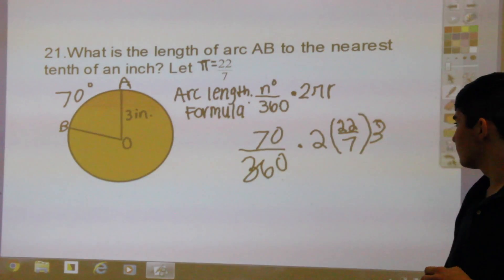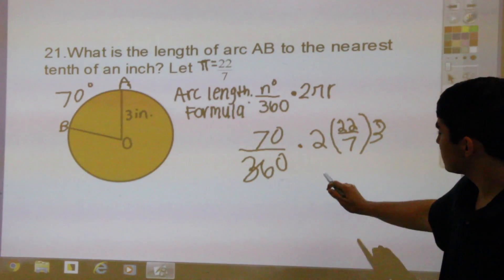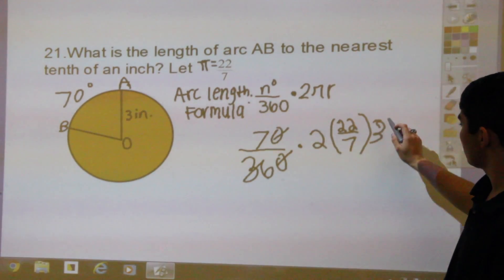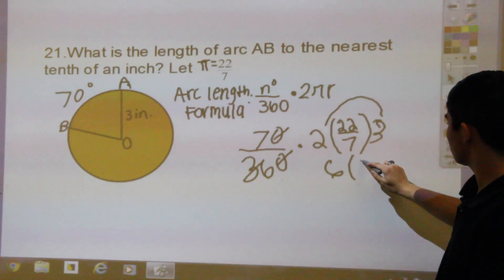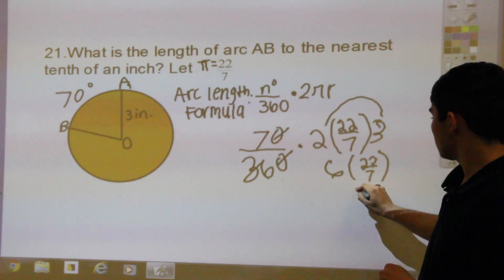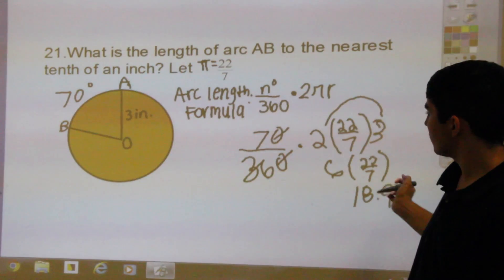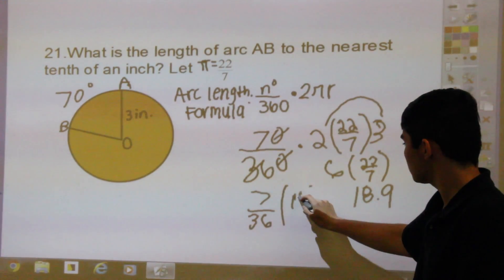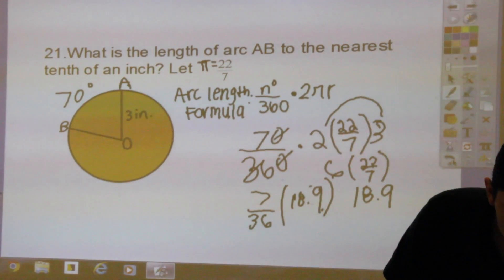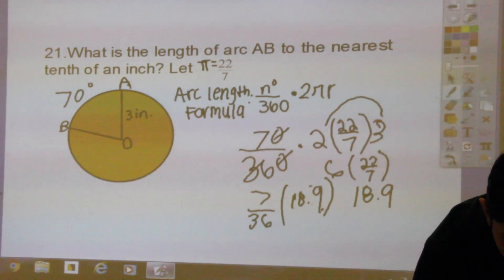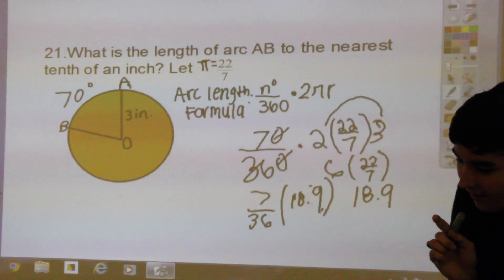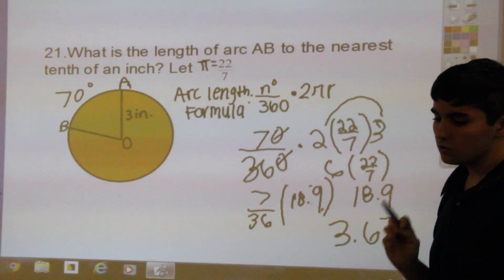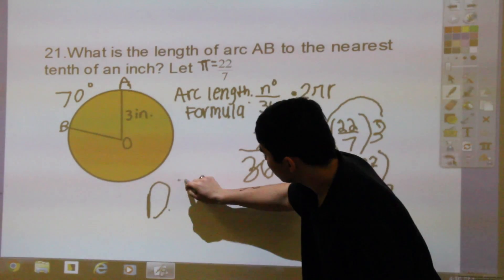So 70 over 360 — since it has two zeros at the end, you can just cancel and cross those two zeros out. Over here, you distribute: 6 times 22 over 7, which equals 18.9. Bringing it back together: 7 over 36 times 18.9 equals 3.67, which rounds to 3.7. That is answer D, 3.7.